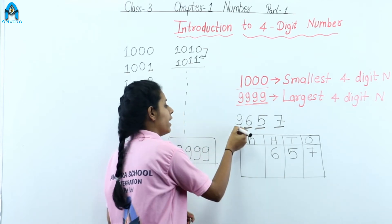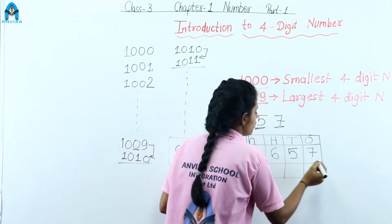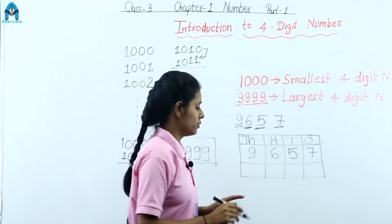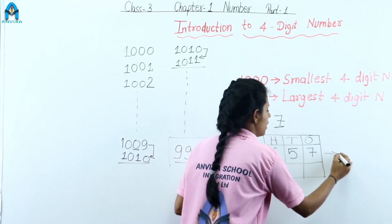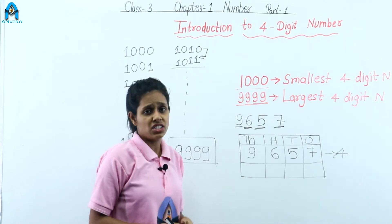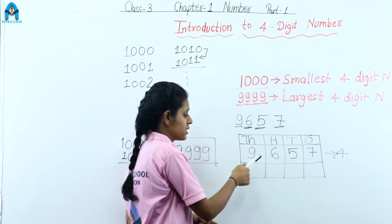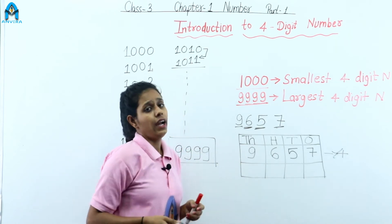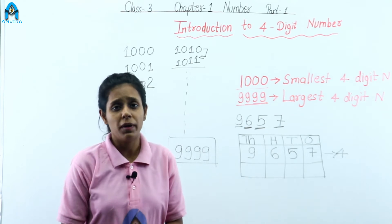Zero on the hundreds place and nine on the thousands place. So this is the place chart for a four-digit number. The number is nine, six, five, seven — a four-digit number. Reading from ones to thousands: seven, five, six, nine. The place names are: ones, tens, hundreds, and the fourth place is called the thousands place.